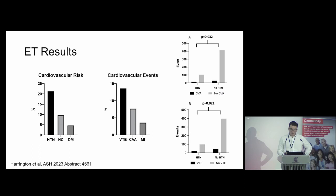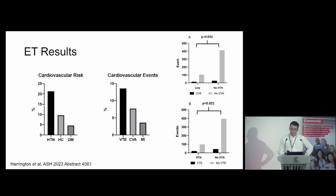Moving to the results from our initial analysis of our ET cohort — due to be presented at the American Society of Haematology meeting in a few weeks' time. Regarding prevalence of cardiovascular risk factors, we saw hypertension in 21% of cases, elevated cholesterol in 10%, and diabetes in just under 5%. For cardiovascular thrombotic events, we observed myocardial infarction in 4%, stroke in 8%, and overall venous thrombosis in 14%. These figures are in keeping with other cohorts using traditional manual methods, suggesting our data is accurate. Patients with high blood pressure were more likely to have stroke and were also more likely to develop venous thrombosis.